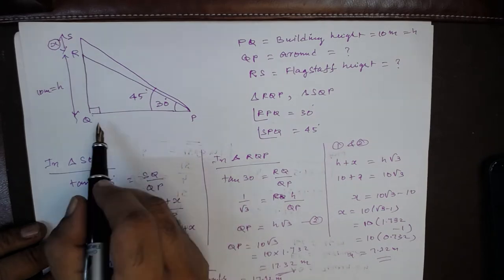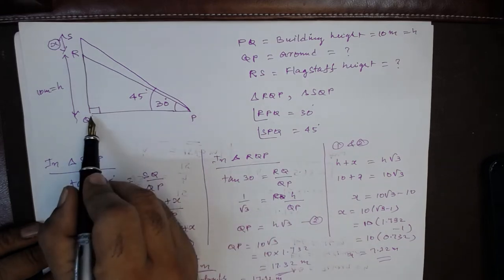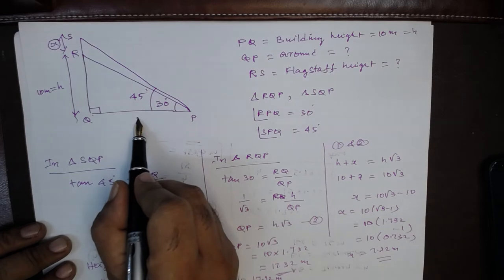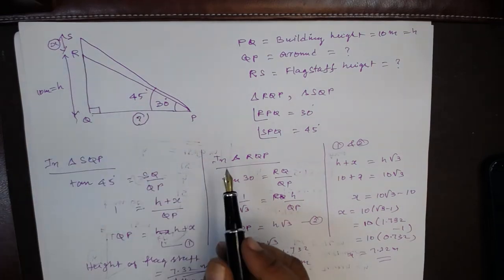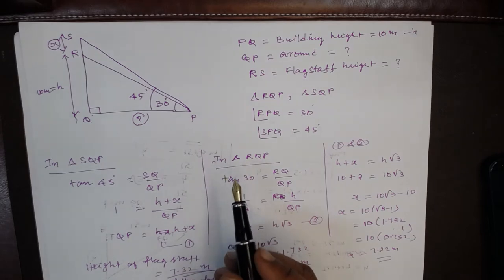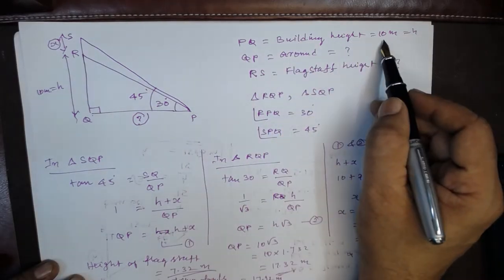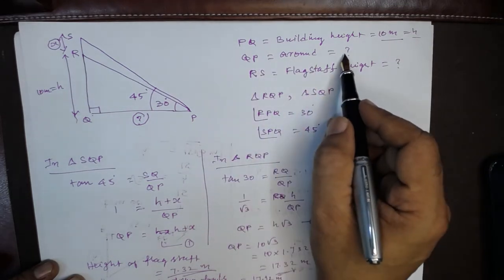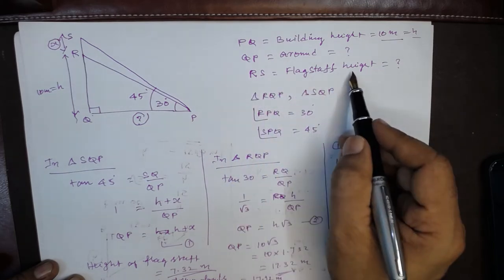And also the distance of P from the foot of the building is asked. So we have to find out two answers. PQ is the building height, that is 10 meters H. QP the ground position is also asked. RS the length of the flagstaff is asked.